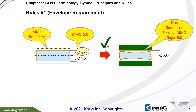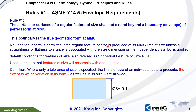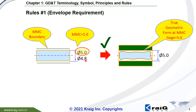Rule No. 1 is the default requirement — it's the default condition for features of size. If it's default, that means you should always regard this size tolerance as two requirements: the first requirement is the local diameter, and the second requirement is Rule No. 1, the MMC boundary. To check this, you can make a gauge with the inner diameter of MMC size. These parts should go through this gauge, and at the same time the local diameter should be within the size tolerance.